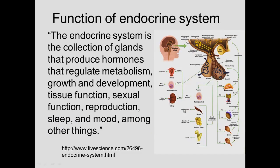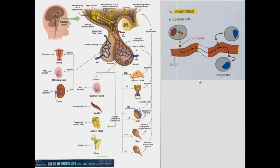The endocrine system is a collection of glands — we can see the various glands throughout here — that produce hormones which regulate metabolism, growth, development, tissue function, sexual function, reproduction, sleep, mood, and among other things as well. The endocrine system does get some help from other groups of cells; for example, in the kidney you have erythropoietin that's produced to make red blood cells. So there are other informational molecules in addition to the endocrine system in terms of regulating body function.